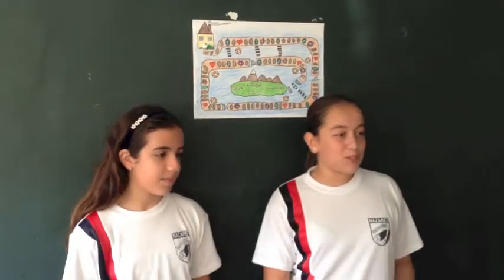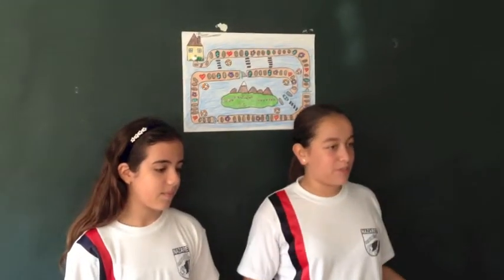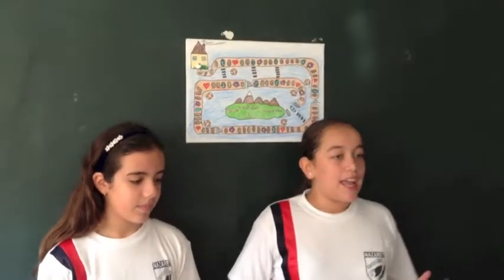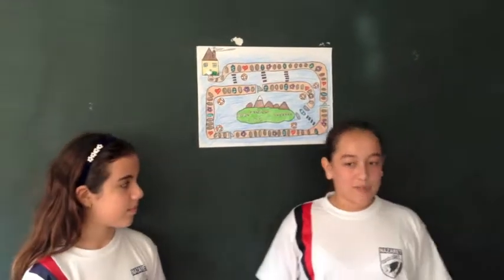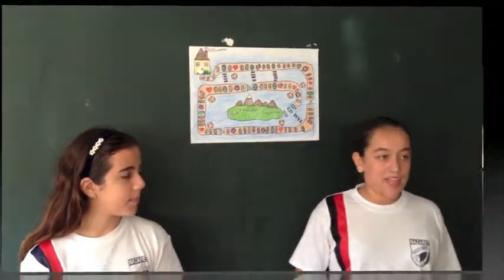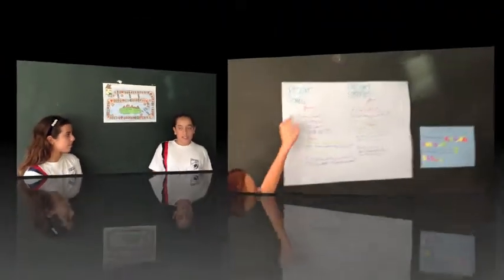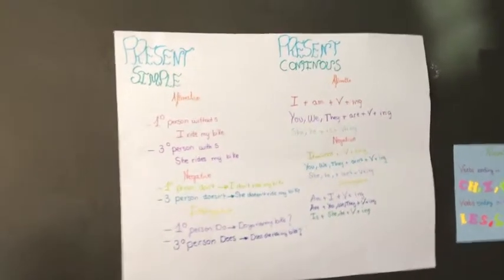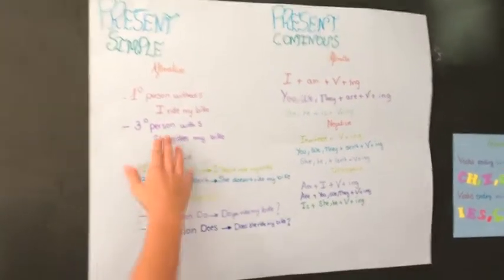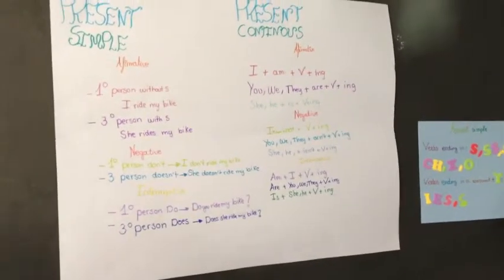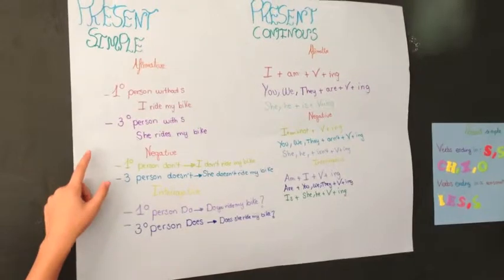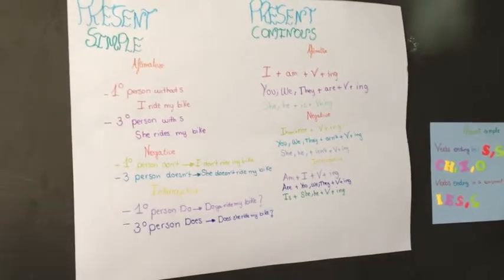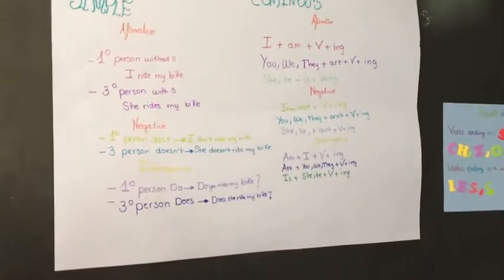The present simple is for the daily routine. You only have to write subject plus verb plus object. For the first person, the sentence is: I write my book. The third person of the affirmative form is: she writes my book, with an S.